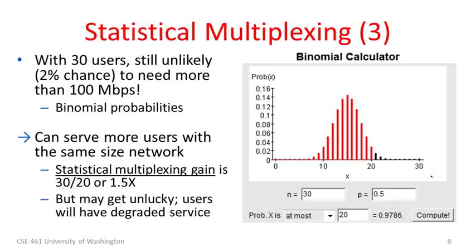In fact, I've computed this ahead of time: if you have 30 users in this network under the same assumptions, and all users are using the network independently and randomly, then it's still very unlikely you'll need more than 100 megabits per second — there's only about a 2% chance of exceeding capacity. How do we work this out? The calculation involves binomial probabilities, which you can look up if you'd like to find out more.